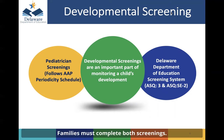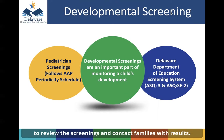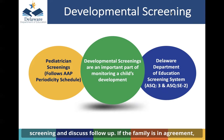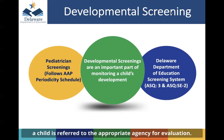Families must complete both screenings. The Department of Education has set up a system to review the screenings and contact families with results. If there is a concern, the family is contacted to review the screening and discuss follow-up. If the family is in agreement, a child is referred to the appropriate agency for evaluation.